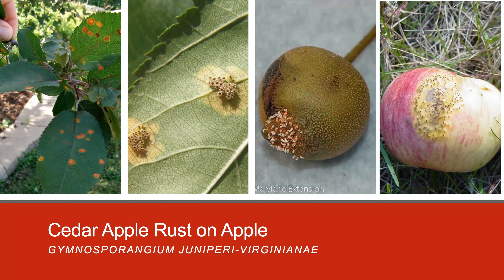On fruit, similar yellow-orange spots appear usually at or near the calyx end of the fruit. These spots are slightly raised. The tube-like aecia can also form on the slightly raised fruit lesions — these white, orange-cream-colored structures are the aecia. When fruits are affected early in the maturing process, they are often stunted and deformed.